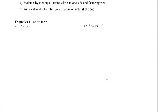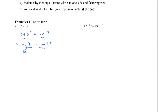Let's take a look at these two examples. Solve for X. We're going to log both sides so we can bring X down using the power law. By logging both sides, we can take that X and move it to the front as a coefficient. Then we divide both sides by log 3, giving us X is equal to log 17 divided by log 3. There is no law to combine these, so go to your calculator, type in log 17 divided by log 3, and that gives you 2.58.